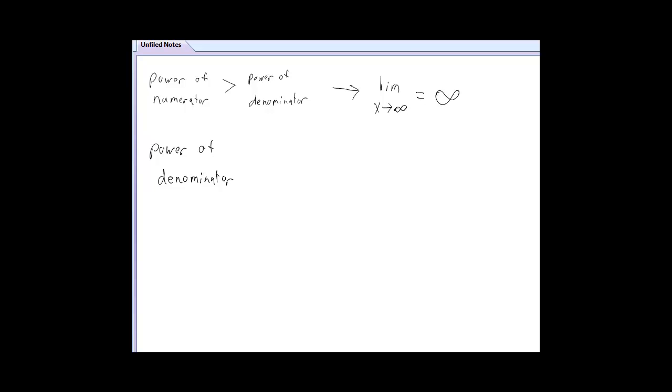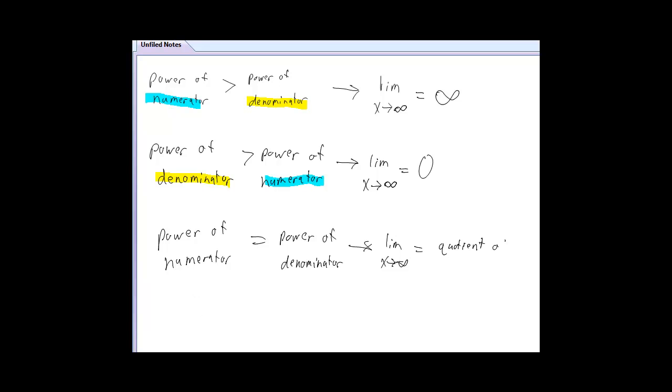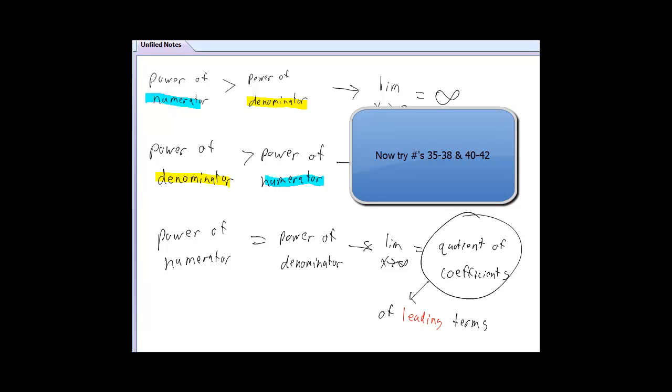And that'll work for any time the powers are the same. So, if the power of the top is bigger than the bottom, the limit approaches infinity. If the power of the bottom is bigger than the top, the limit as x approaches infinity is 0. And if the powers are the same for your numerator and denominator, the limit is the quotient of your leading coefficients. Now, knowing that, you should be able to try the polynomial end behavior models. That's numbers 35 through 38 and 40 through 42. So, good luck.